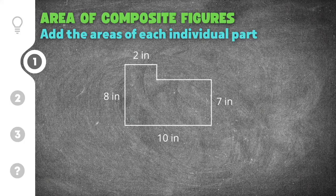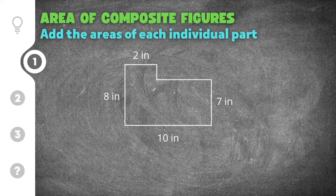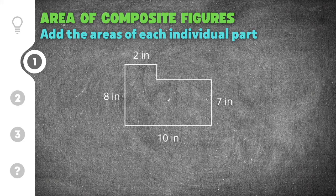Here's our first problem. You can see this shape needs to be broken into other shapes that you know how to find the area of. When I look at this composite figure, I'm trying to figure out how I can break this shape into rectangles, triangles, or circles. In this case, I can break this into two rectangles.